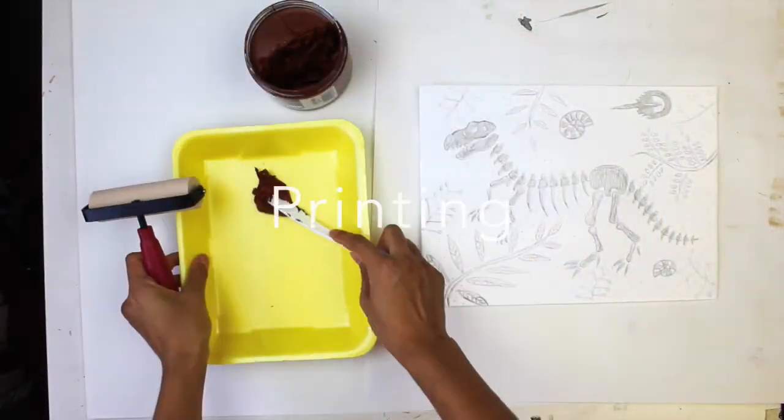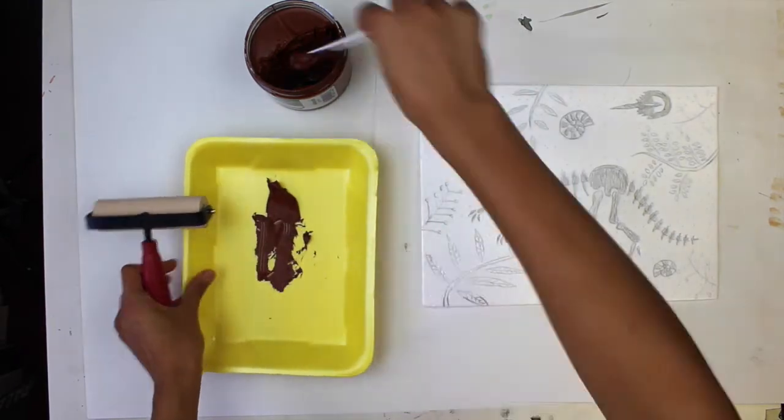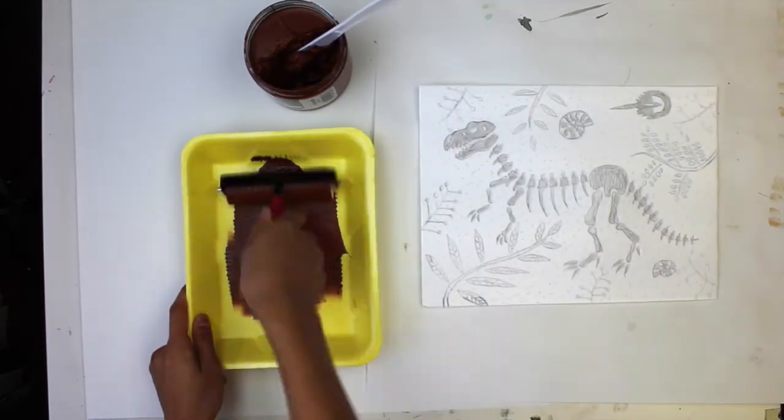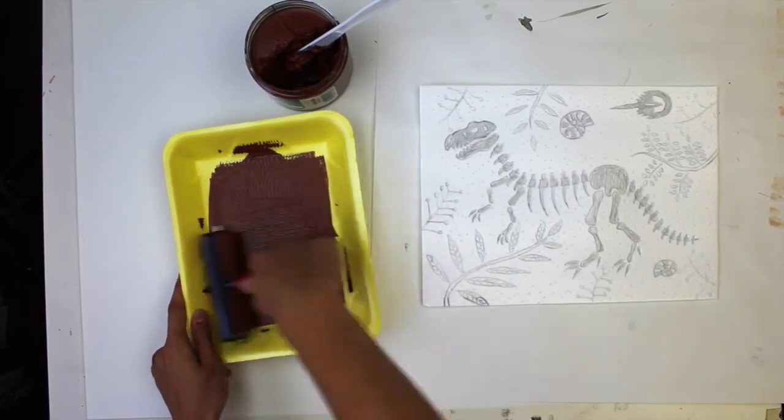Now we can begin printing. Take some ink and roll it onto the styrofoam, making sure it's evenly rolled. Roll in different directions.